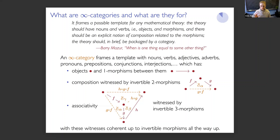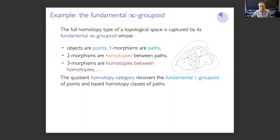It's natural to ask why we are weakening the category structure in addition to adding these higher dimensional morphisms. The reason is that's how the examples come. A prototypical example of an infinity category — this one happens to be an infinity groupoid, meaning all of its morphisms are invertible — is something called the fundamental infinity groupoid. It's an infinity category whose objects are the points of a fixed topological space. The one-morphisms are the paths of that space. The two-morphisms are the homotopies between these paths. The three-morphisms are homotopies between those homotopies. And then we can have higher homotopies all the way up.